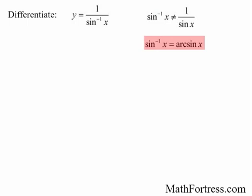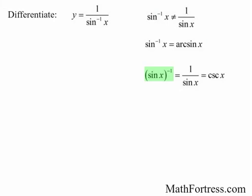The proper way to mathematically represent the reciprocal of a function is as follows: sine of x is raised to the power of negative 1, which is the same thing as 1 over sine of x, which equals cosecant of x. Just keep in mind that the negative 1 on inverse trigonometric functions does not represent an exponent, unless the entire expression is raised to the power of negative 1. Knowing that, we can rewrite the expression as sine inverse of x raised to the power of negative 1.